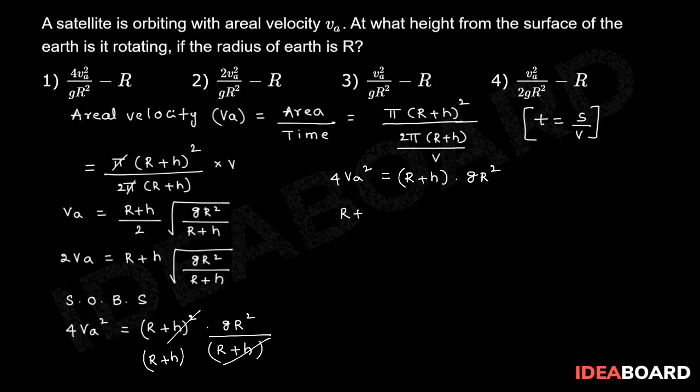R plus h is equal to 4 Va square by gr square, then h is equal to 4 Va square by gr square minus R. Therefore, h is equal to 4 Va square by gr square minus R. This is the height.